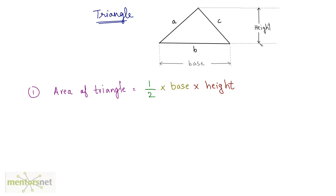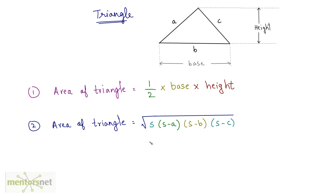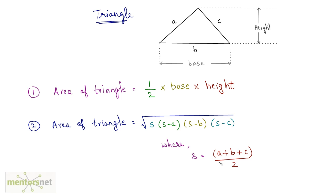Now, if you don't know the base and height of a triangle, there is another formula to calculate the area. The area is equal to the square root of S into (S minus A) into (S minus B) into (S minus C), where A, B and C are the three sides of the triangle, and where S is equal to half of the sum of the sides — that's half of (A plus B plus C).